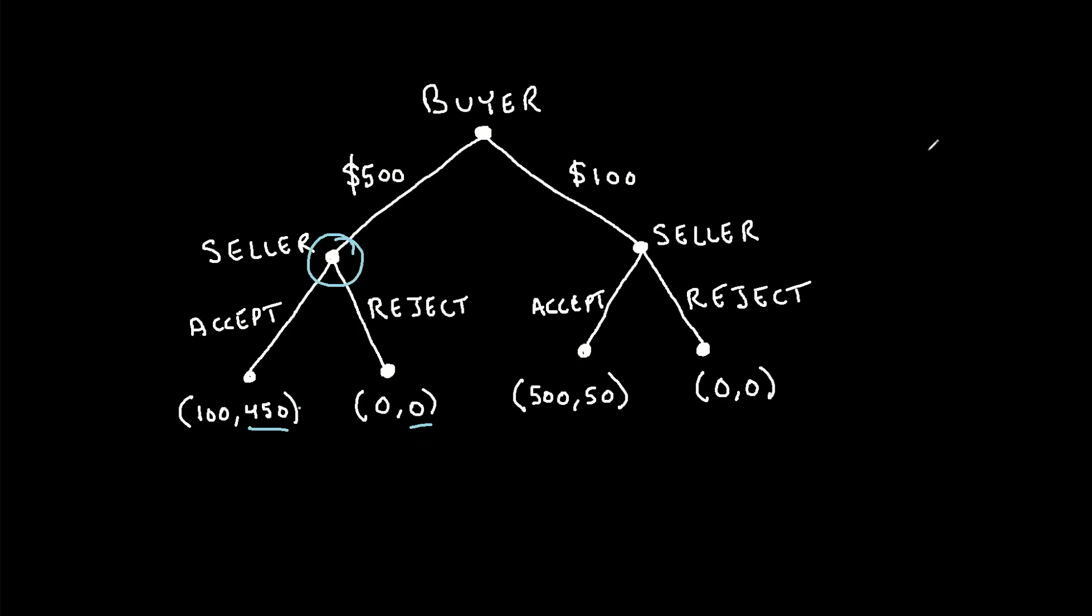So which would they rather have? Well, obviously, they would rather have the payoff of $450, because that's larger. So what we can say is that if we reach this point in the game, this outcome is never going to happen, because the seller is never going to choose to take a payoff of $0 as opposed to $450. So we can eliminate this as one of the possible outcomes.